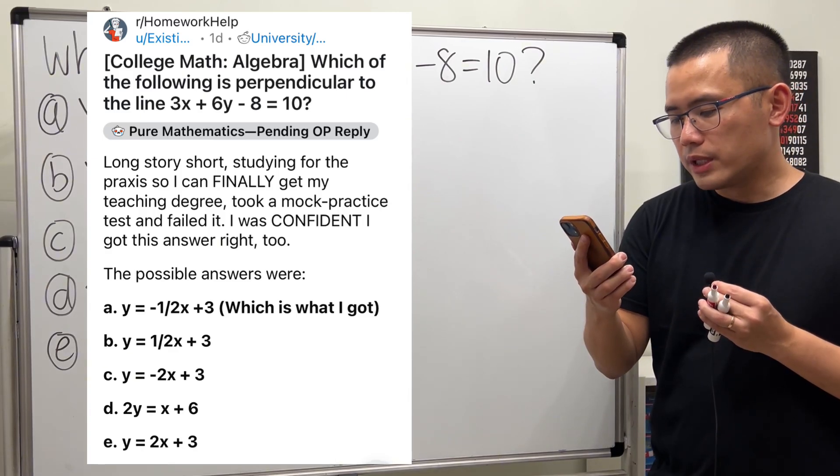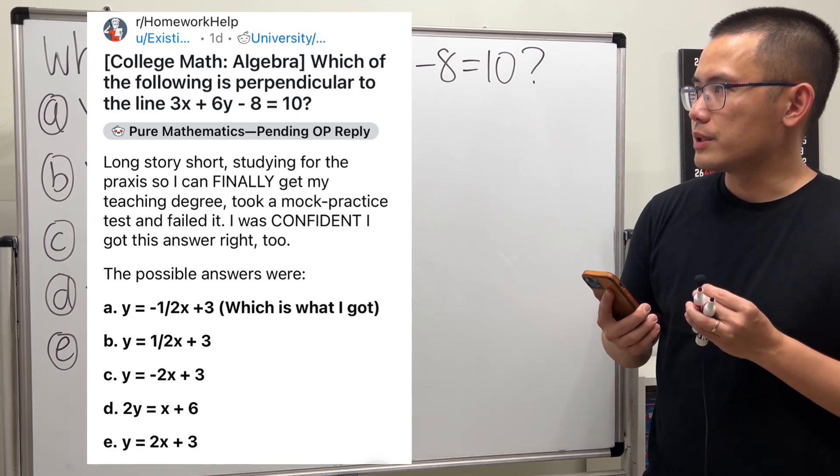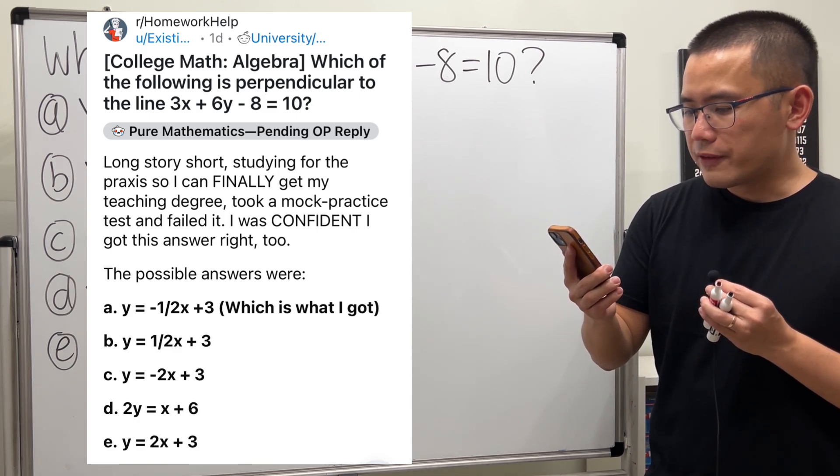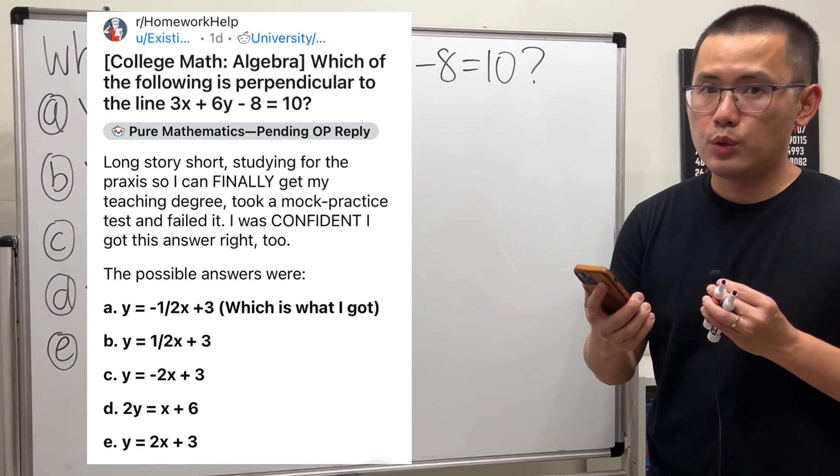Long story short, studying for the Praxis so I can finally get my teaching degree. Okay, let's take a look. The question is, which of the following is perpendicular to the line 3x plus 6y minus 8 equals 10?